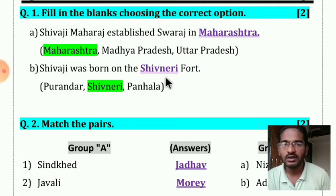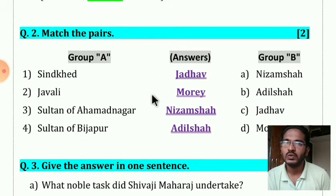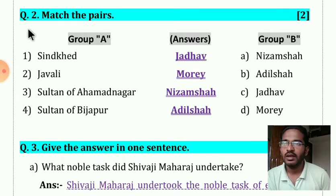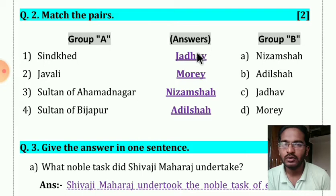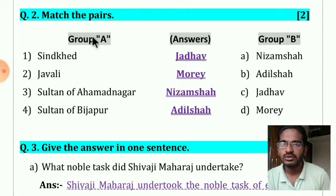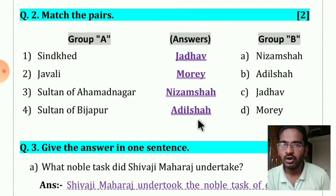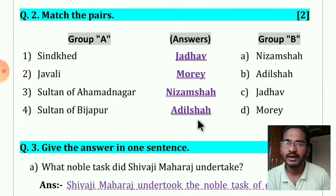Now question number two — Match the Pairs, Group A and Group B. I told you to write answers directly, but some students have drawn lines. You should not draw lines; we have told you again and again that you are not small children now. You have to write the answers directly.